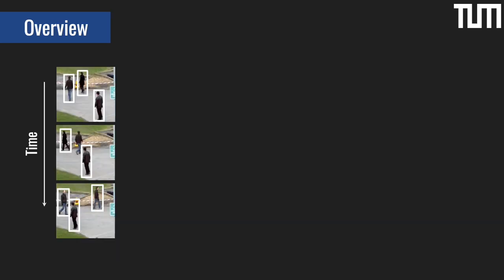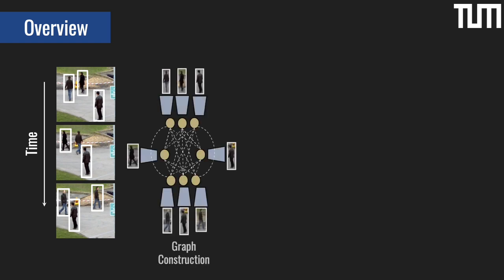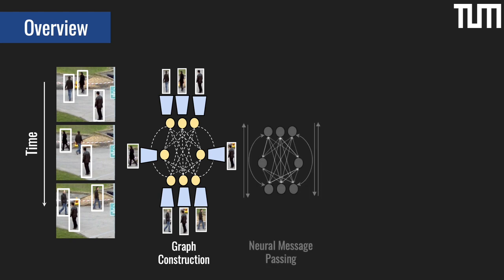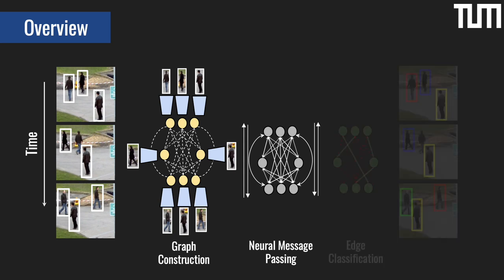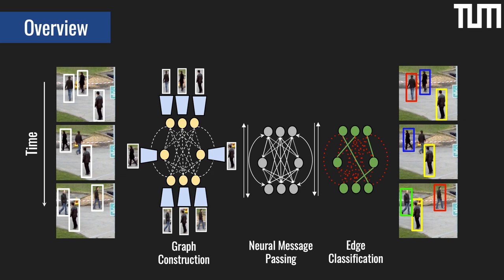More specifically, we aim to perform both feature extraction and final solution prediction with a model that operates on the graph domain. To do so, we first embed appearance and geometry cues into graphs as node and edge embeddings. After that, we use a message-passing network to propagate these embeddings across the graph iteratively. Finally, we take the updated edge embeddings, which now encode high-order information, and classify them into active and non-active.